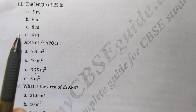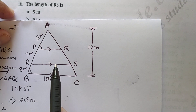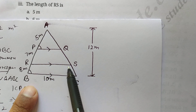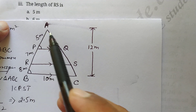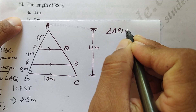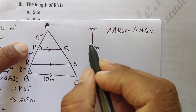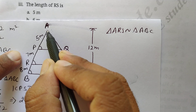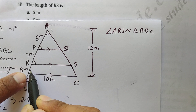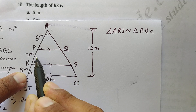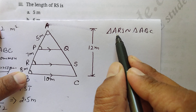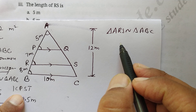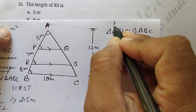The next part is the length of RS. We will make triangle ARS and triangle ABC similar. Angle A is common in both triangles, and angle R in the small triangle equals angle B in the big triangle because RS is parallel to BC — these are corresponding angles with AB as the transversal. So by AA, triangle ARS is similar to triangle ABC, and by CPST the ratios of sides will be equal.